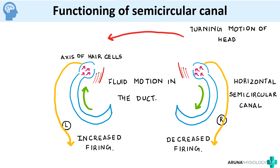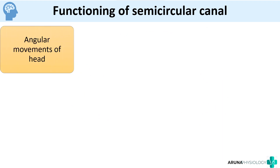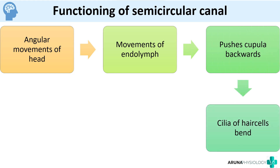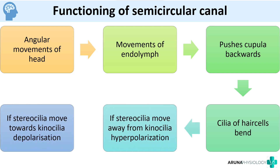Whenever there are angular movements of the head, endolymph movement pushes the cupula, bending the cilia of the hair cells. If stereocilia move away from the kinocilium it causes hyperpolarization; if they move towards the kinocilium it causes depolarization. This is how semicircular canals detect rotational acceleration.